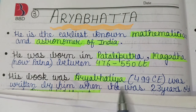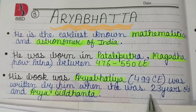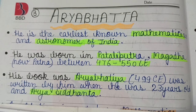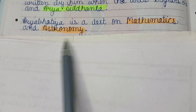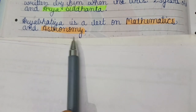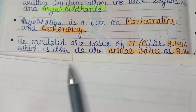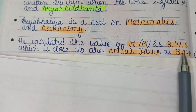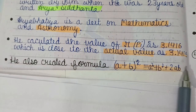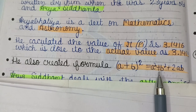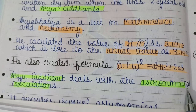His book, Aryabhatiya, was written in 499 CE when he was 23 years old. It is a text on mathematics and astronomy. He calculated the value of pi as 3.1416, which is close to the actual value of 3.1415. He also created the algebraic formula: (a + b)² = a² + b² + 2ab.